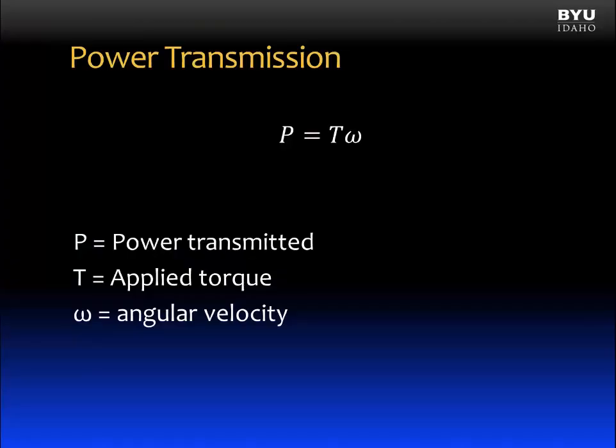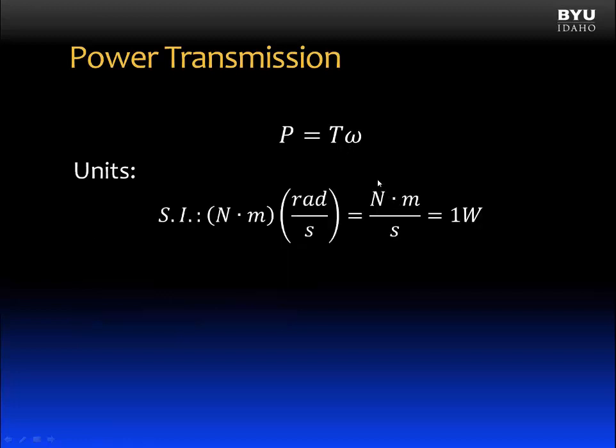Let's now talk about power transmission. This is the equation for power transmission along a shaft. Power is often transmitted from motors or turbines through circular shafts, and the shafts are subjected to a torque that depends on both the power and the angular velocity. So we can use this equation for power transmission. It says that power is equal to the applied torque times the angular velocity.